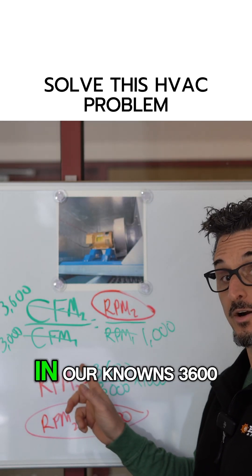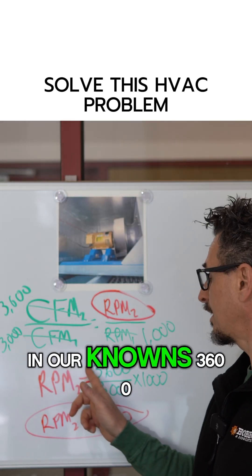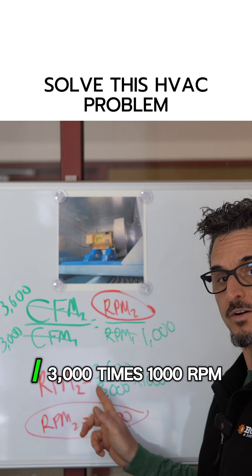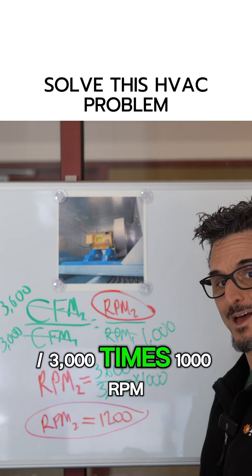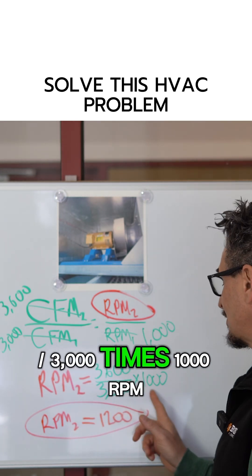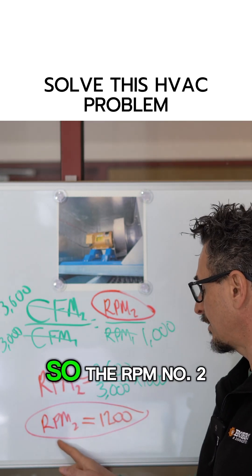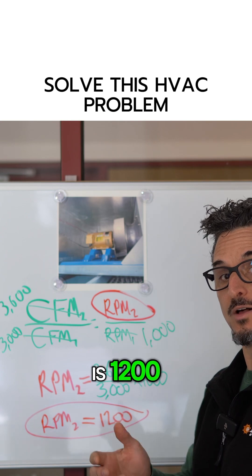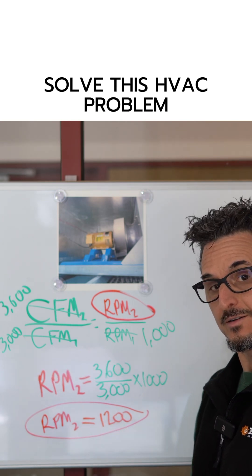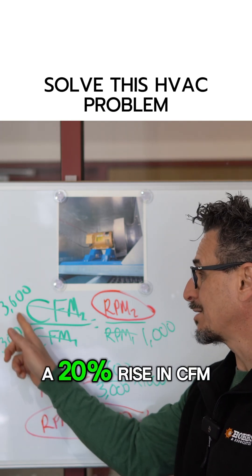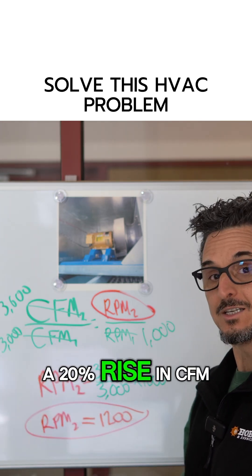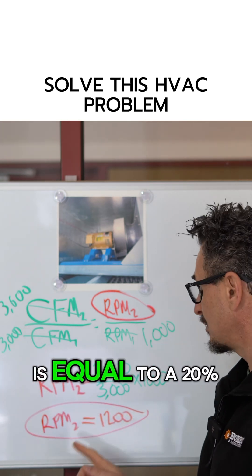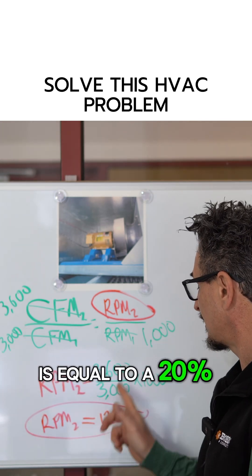If we plug in our knowns: 3,600 divided by 3,000 times 1,000 RPM — RPM number two is 1,200. As you can see, a 20% rise in CFM is equal to a 20% rise in RPM.